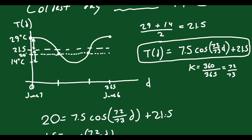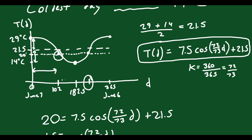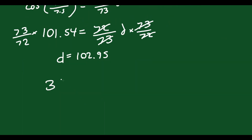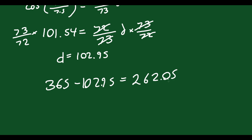D ≈ 102.95 days. Looking at our drawing, the full year is 365 days, so halfway is about 182.5. Since 102 is less than 182.5, this answer corresponds to the point going into winter — which we didn't want. We want the spring answer on the other side. Since the function is symmetrical, we do 365 − 102.95 = 262.05.